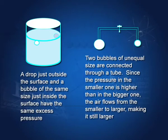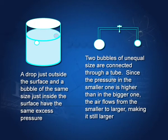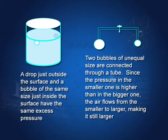Suppose we have water in a beaker with a drop just touching the surface and a bubble just inside the liquid. The bubble inside the liquid has only one surface — the inner surface — so the excess pressure inside it is 2S/r. This drop also has a pressure greater inside by 2S/r. If they are of the same size, the excess pressure inside is the same for both the drop near the surface and the bubble inside the liquid.